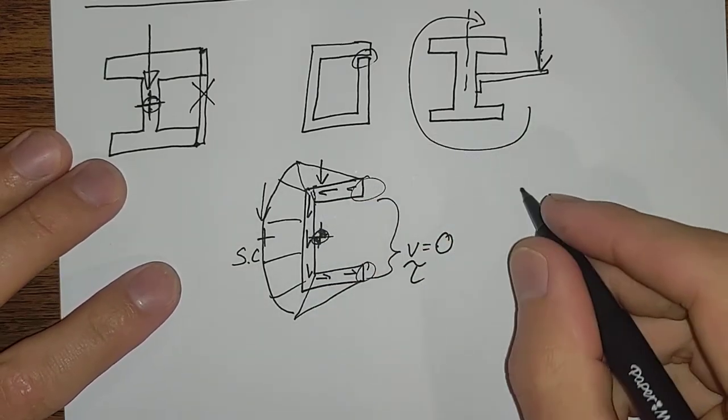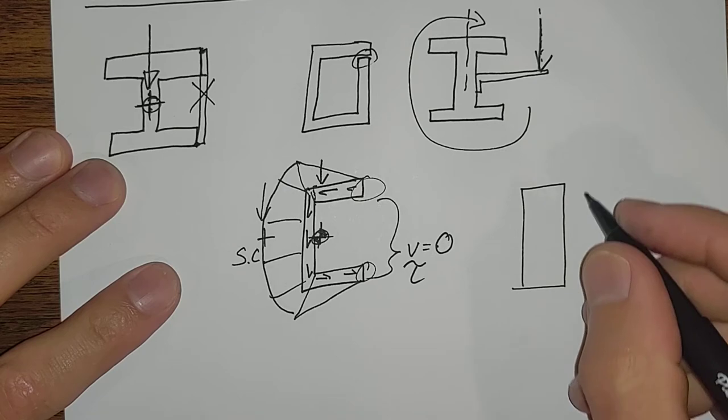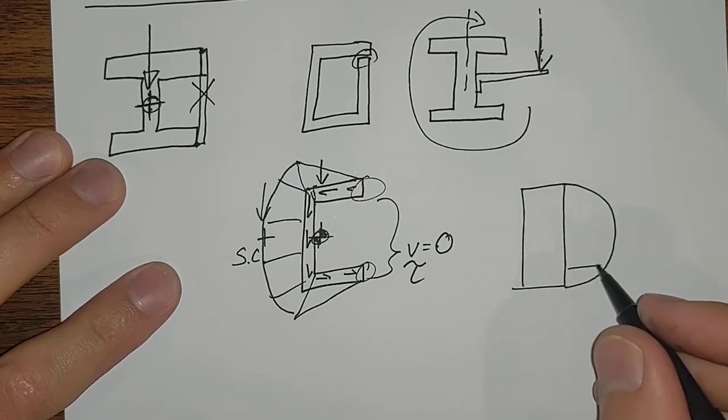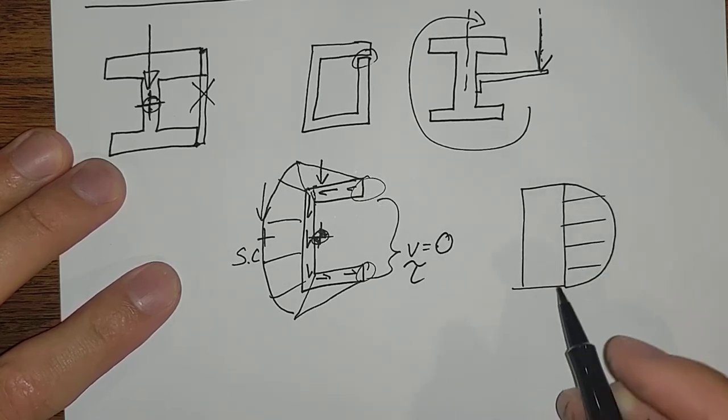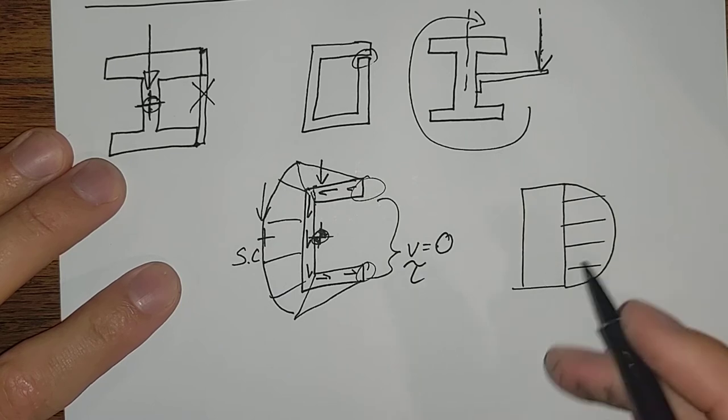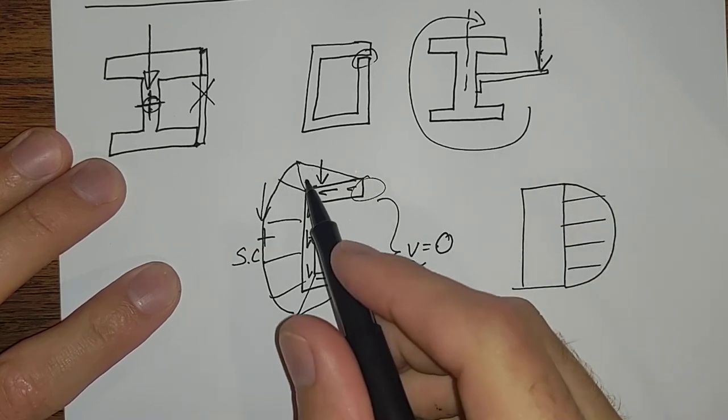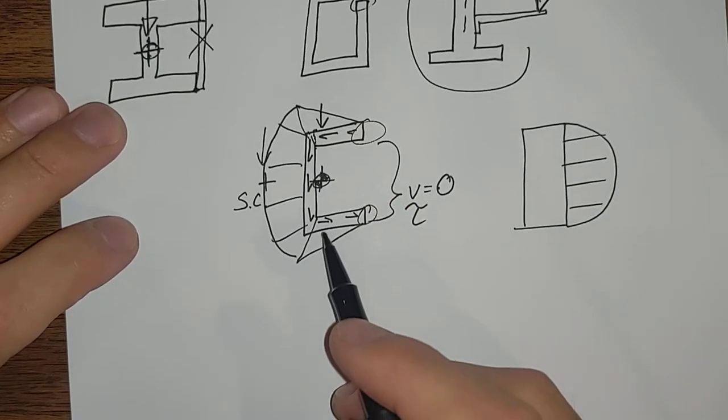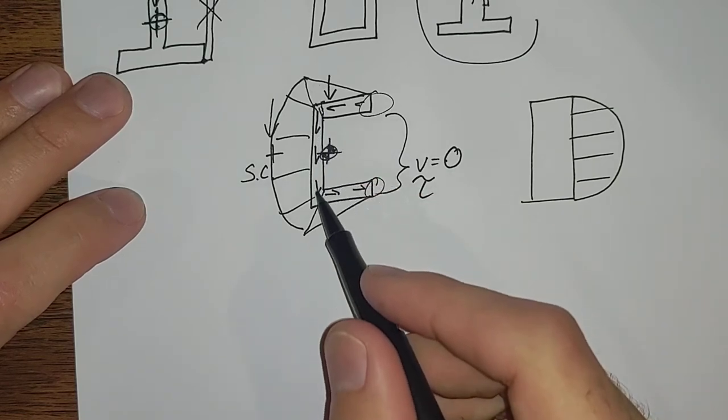And you've got a big quadratic shear coming through there, or parabolic. On a rectangle, your shear force is distributed like that. Because again, the free boundaries have to be zero shear.